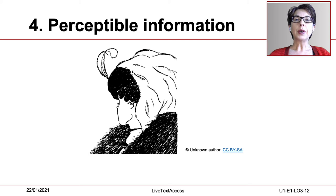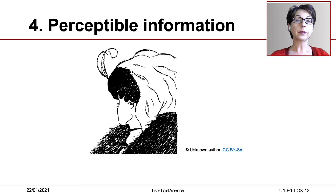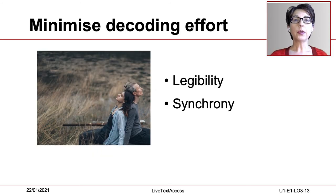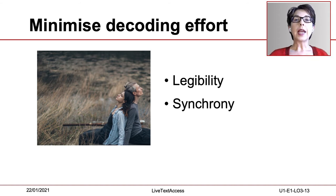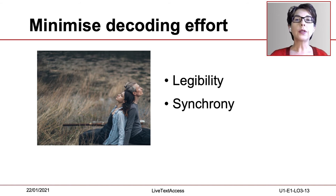Perceptible information is principle number four. Perceiving subtitles should be as easy as possible — in other words, require the least effort possible. Making subtitles perceptible to users requires considering two main aspects: legibility and synchrony. Legibility deals with features that affect the decoding of information during the first interaction between a reader and a text. In written texts, perception is influenced by parameters that range from typographical to paratextual. Some examples are font size, font type, contrast, and steady position on screen.